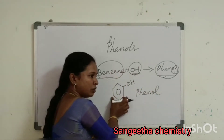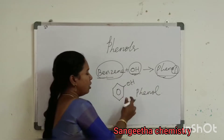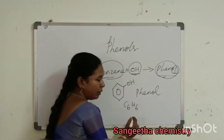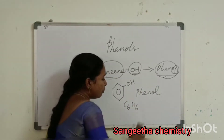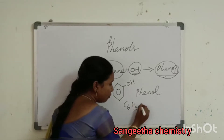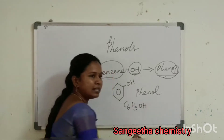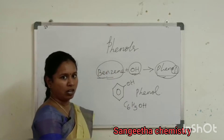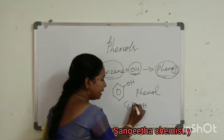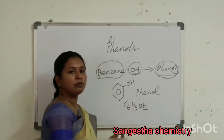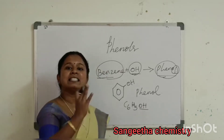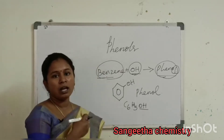First, benzene ring — C6H6. This is one hydrogen removed, giving C6H5OH. Benzene with one hydrogen removed, and the OH group should be attached. That structure is phenol.